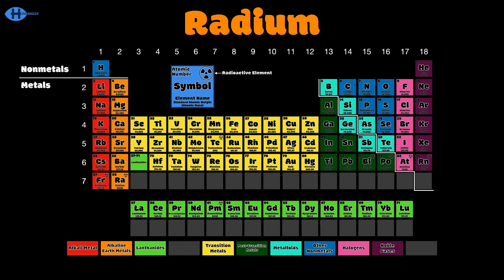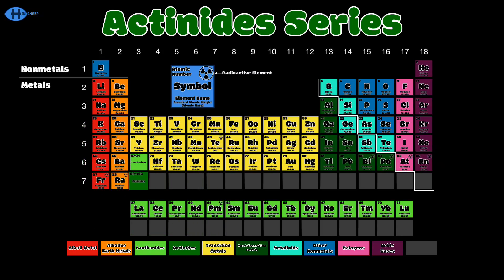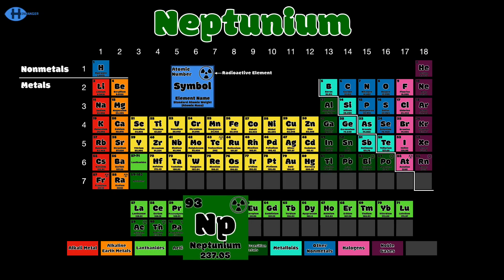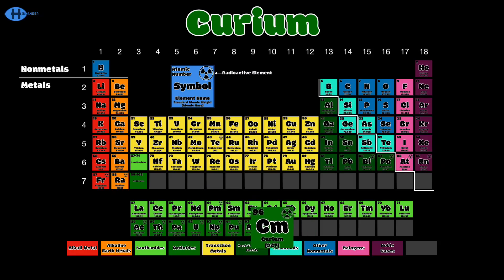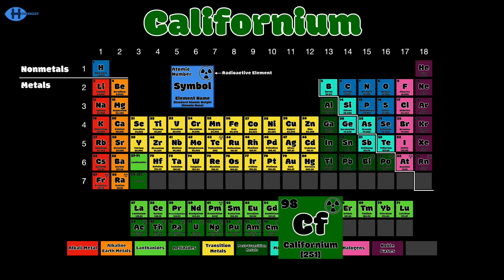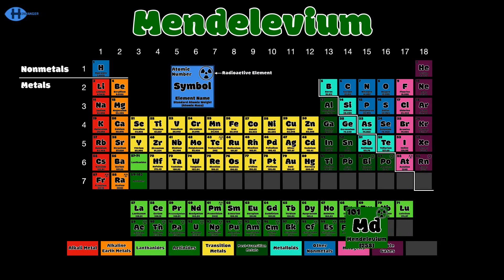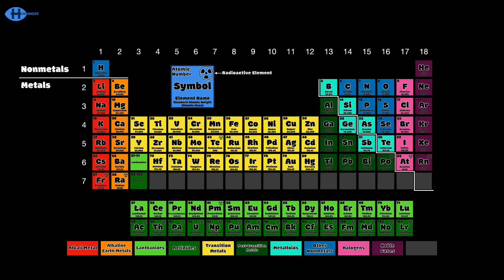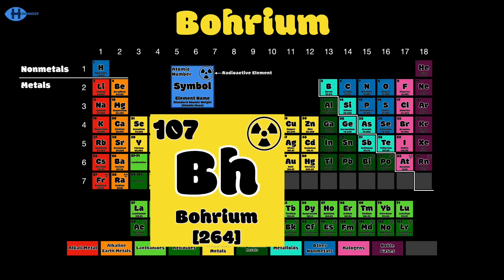Elements 89 to 103 are the actinides: actinium, thorium, protactinium, uranium, neptunium, and plutonium, americium, curium, berkelium, californium, einsteinium, and fermium, mendelevium, nobelium, lawrencium — that's the end of the actinides. Then rutherfordium, dubnium, seaborgium, bohrium, and hassium.